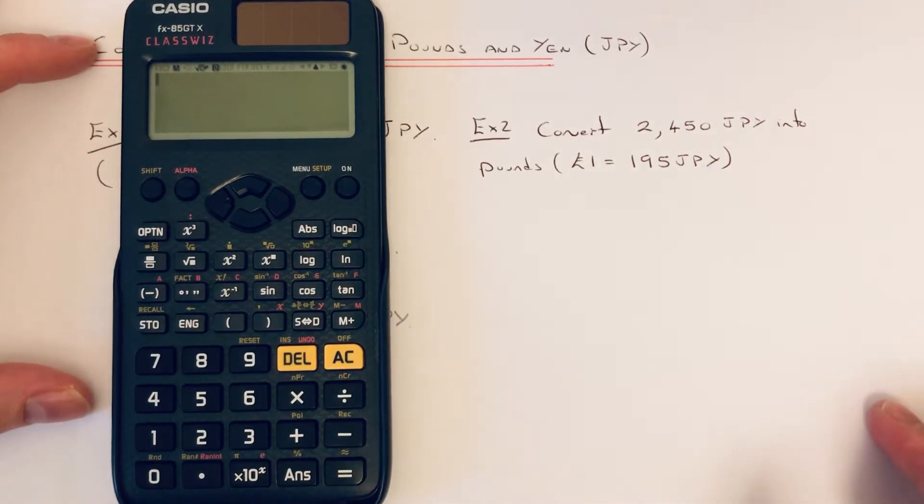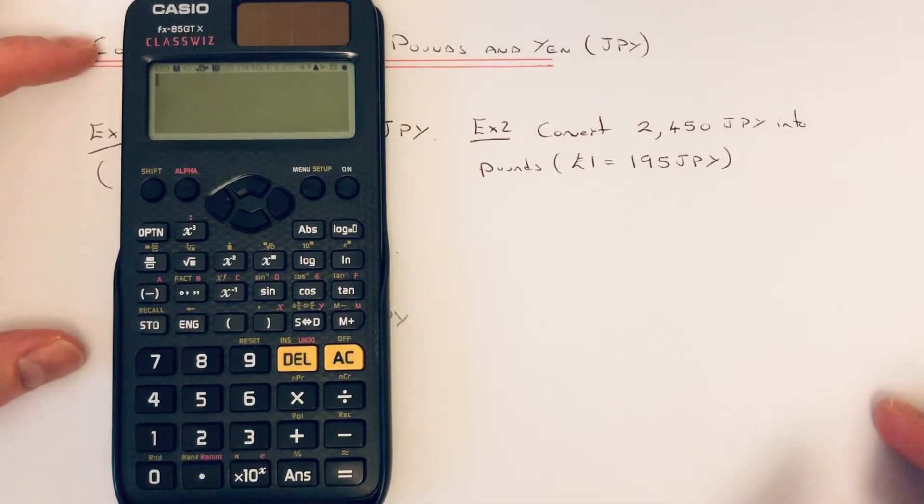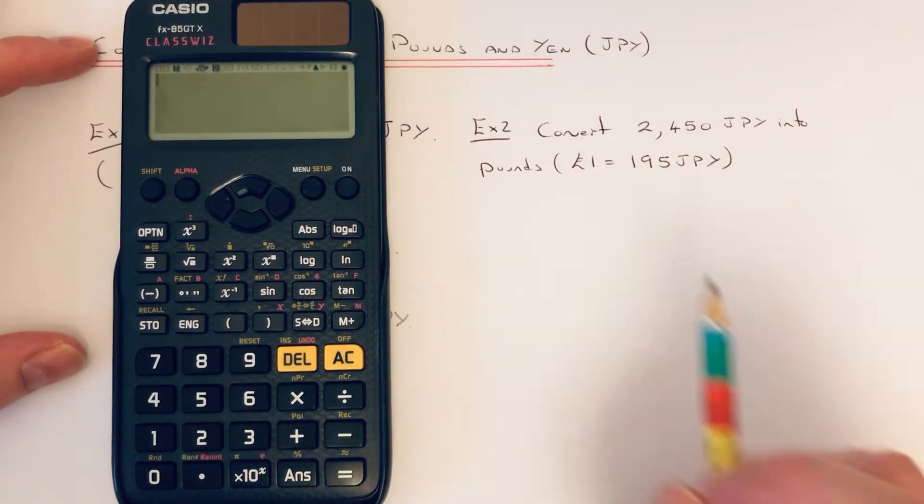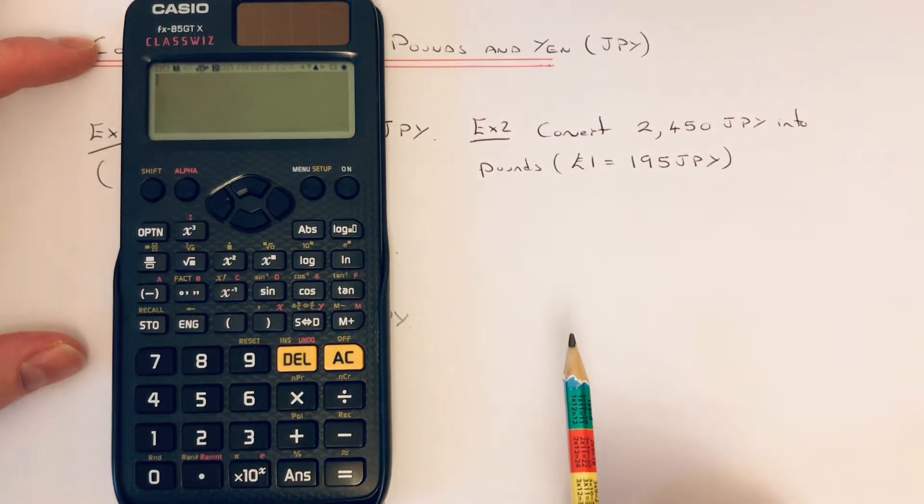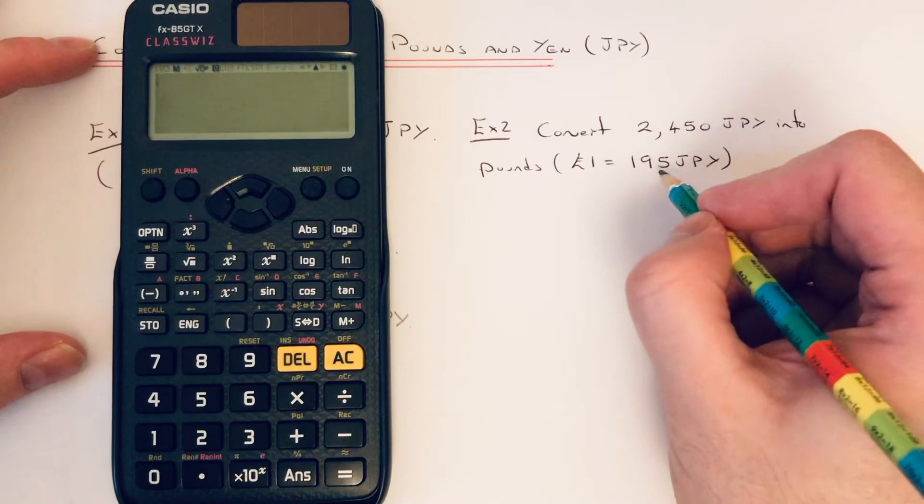This time we need to convert 2,450 Japanese yen into Great British pounds. The exchange rate is £1 equals 195 Japanese yen, so it's slightly higher than the last one. So this number here is our exchange rate number.